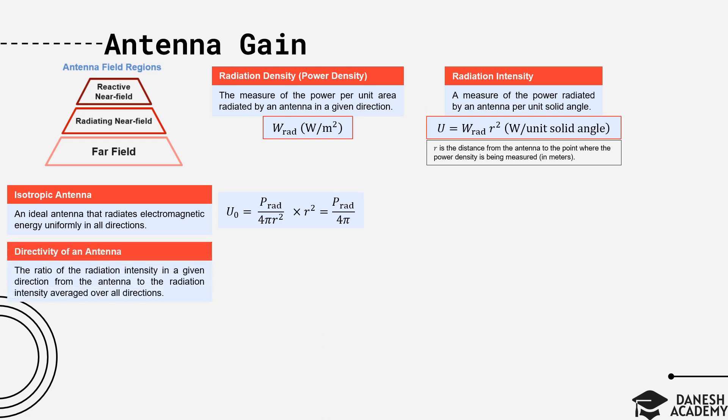The next key parameter of an antenna is directivity, which is defined as the ratio of the radiation intensity in a given direction from the antenna to the radiation intensity averaged over all directions. Or in other words, it is the radiation intensity of the antenna relative to the radiation intensity if the same power was radiated isotropically. By substituting U0, directivity becomes 4 pi times U over radiated power.